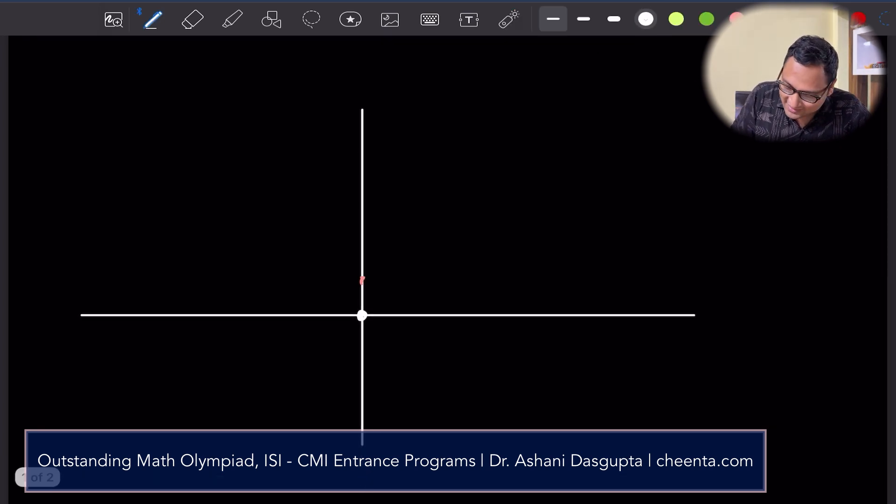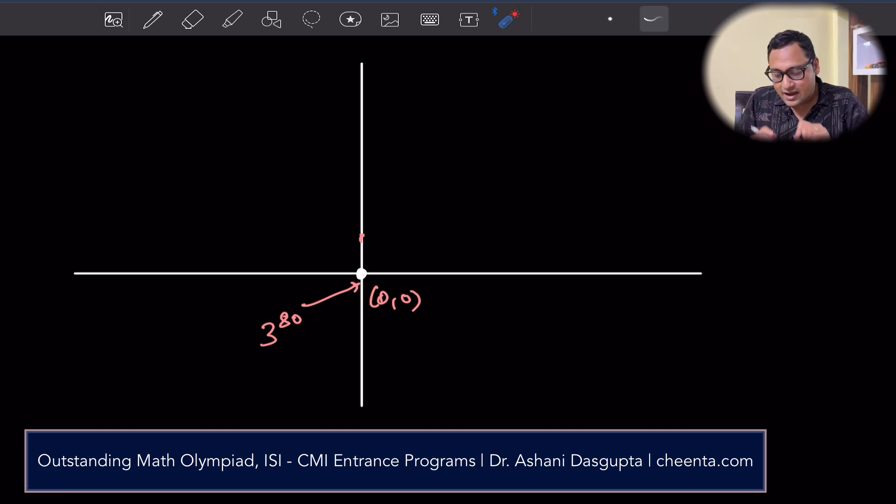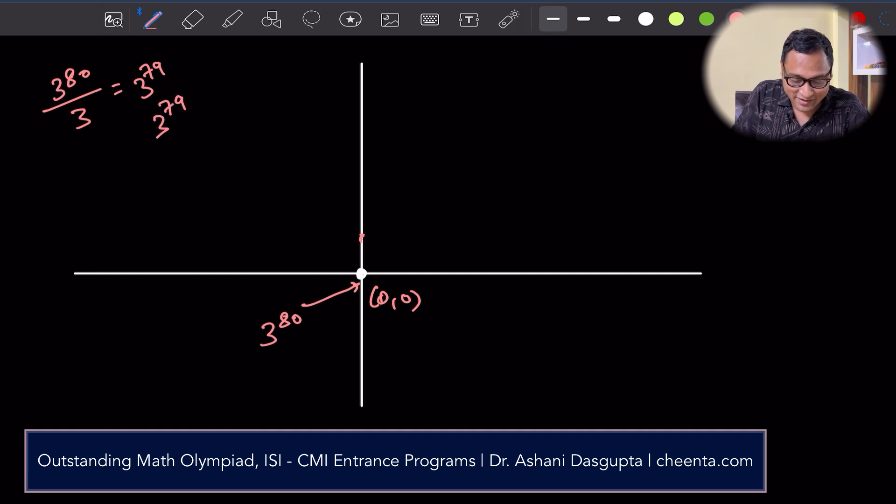Okay, so it says that there are 3 to the power 80 particles at the origin. So here is the position. Origin is 0, 0. And there are 3 to the power 80 particles in it. And then a sort of scattering happens. It's kind of cool. If you take 3 to the power 79, add it three times, you get 3 to the power 80.